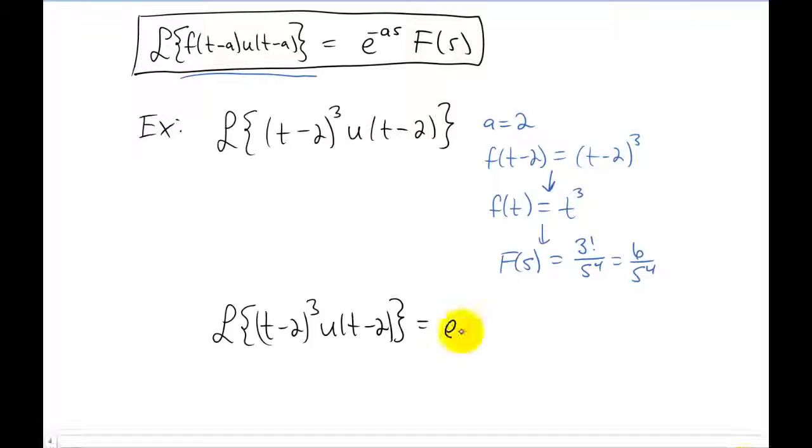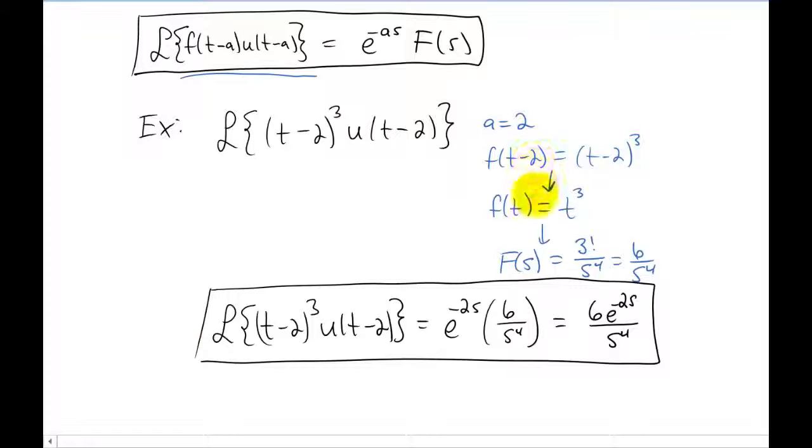Our answer is just going to be e to the negative A s, e to the negative two s times F of s, which of course we can write a little bit more nicely. So that process is pretty notation intensive. But once you understand the notation, I don't think it's too difficult of a process.